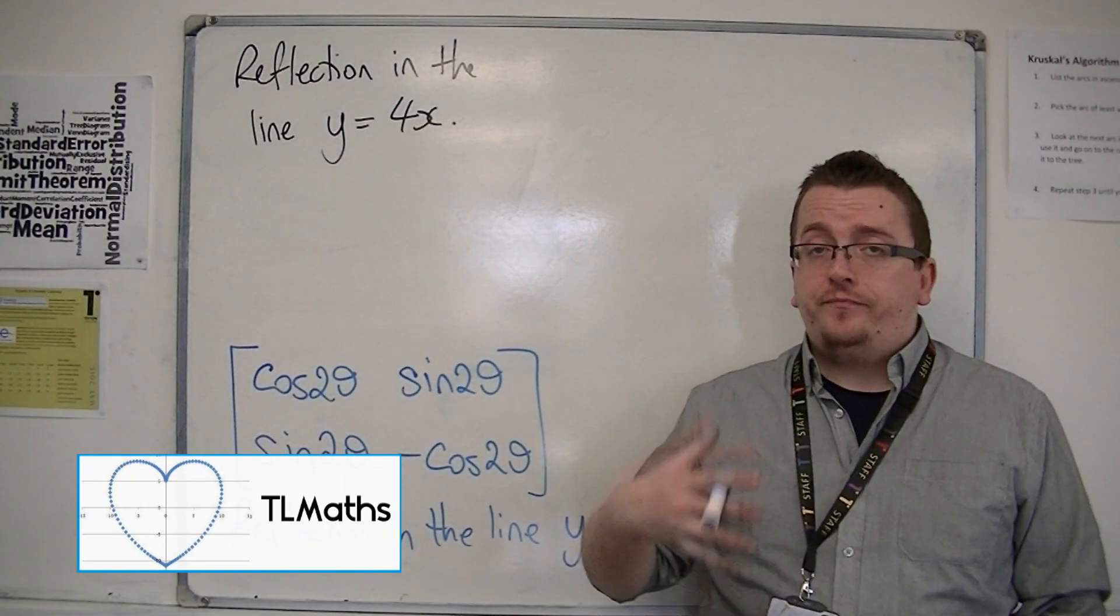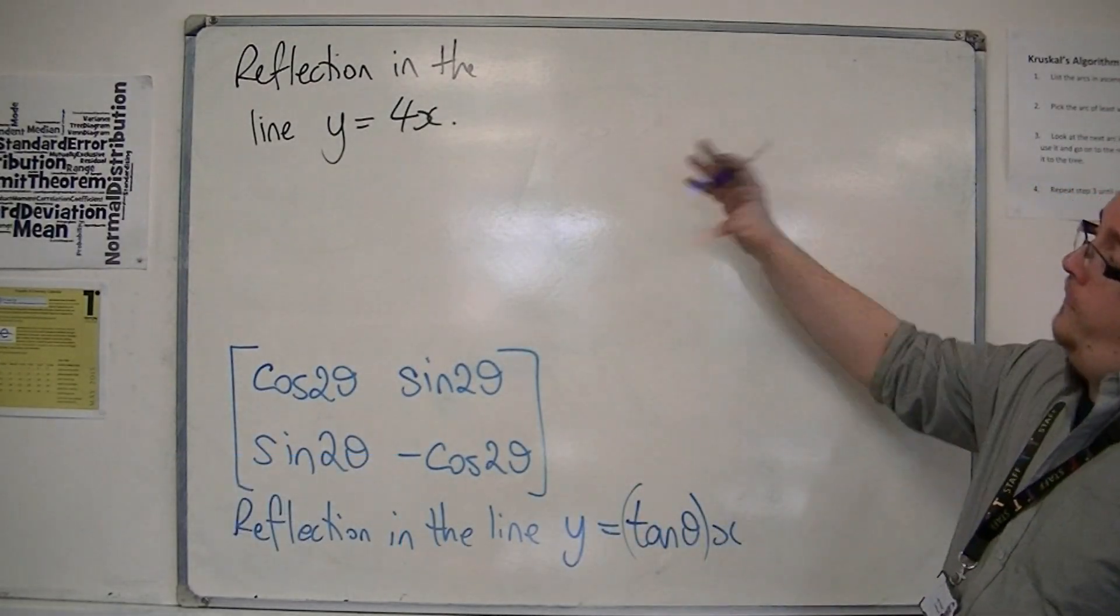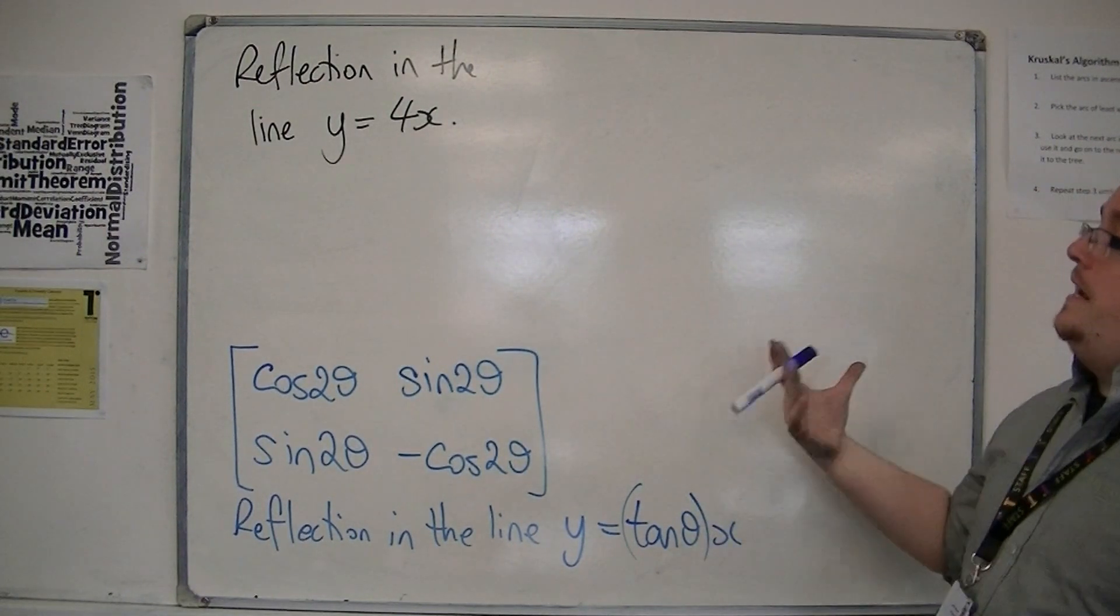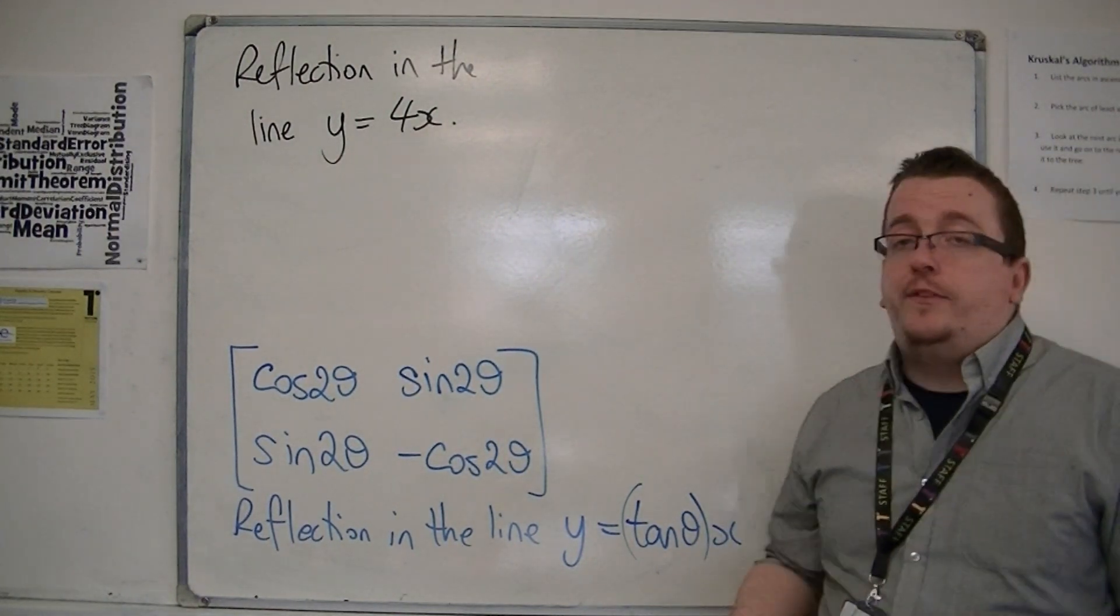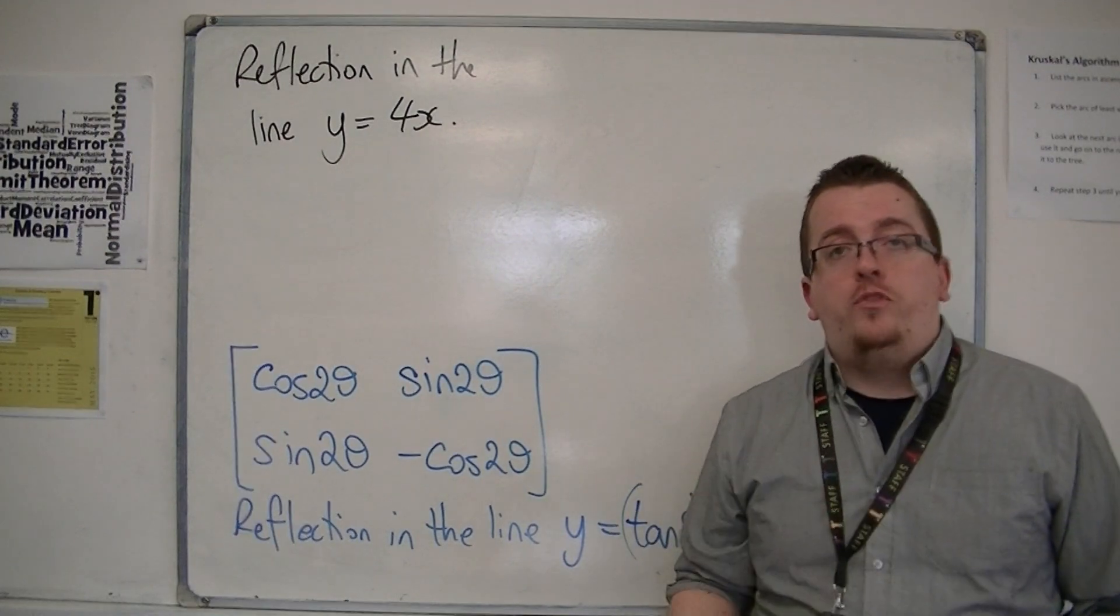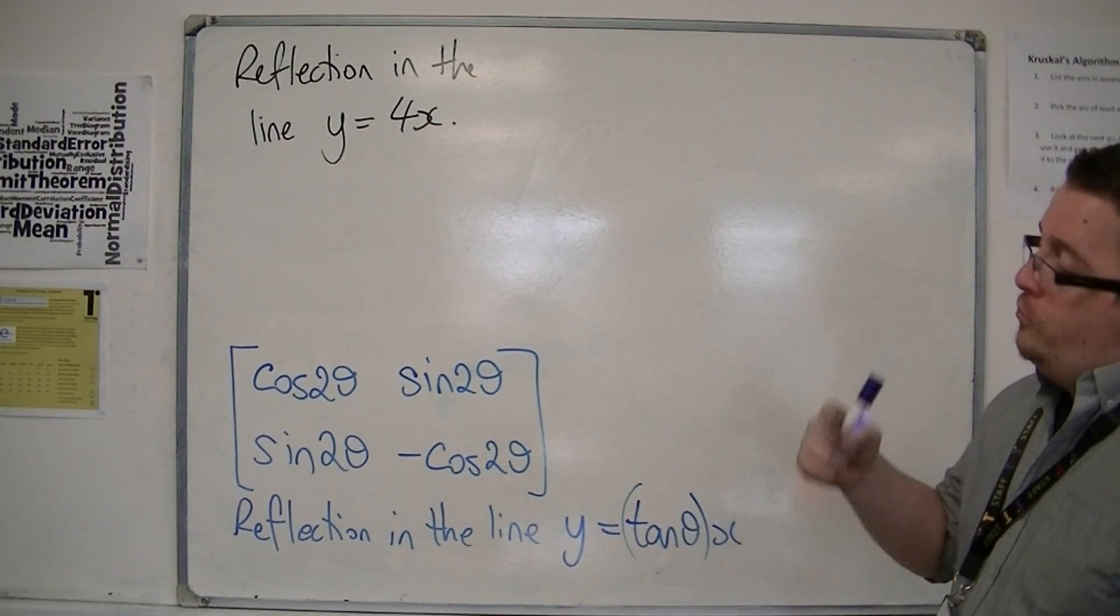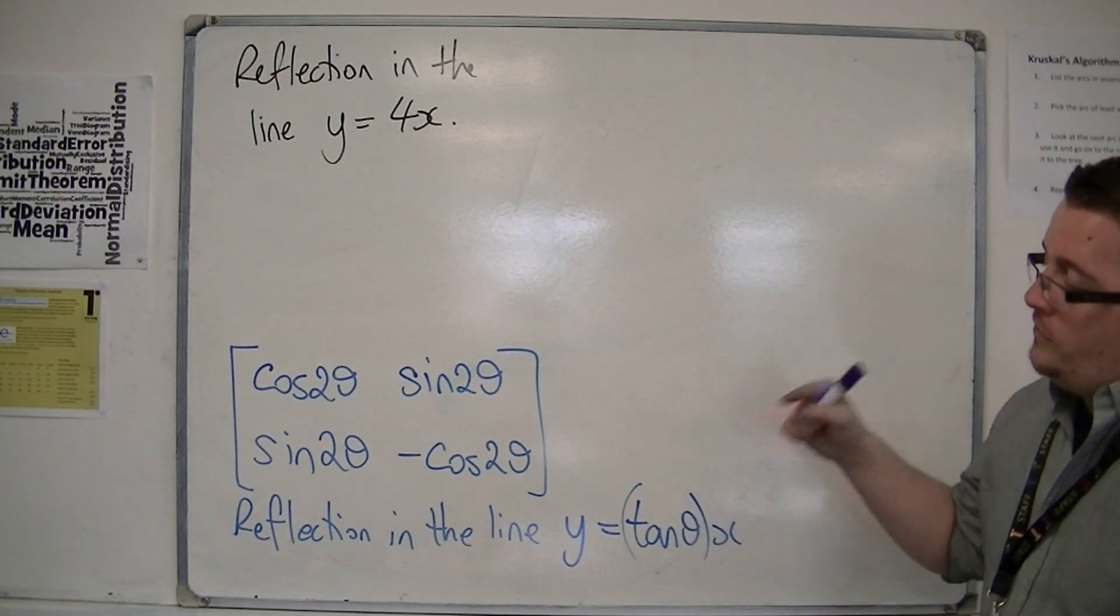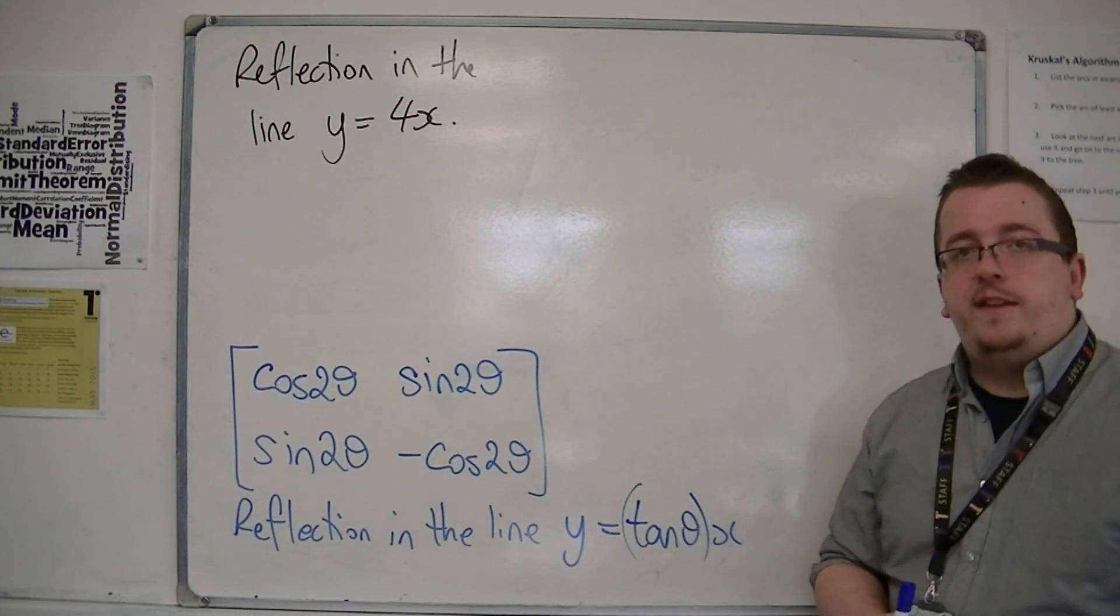So let's say I want to reflect some points or shape in the line y equals 4x, and I want to know what matrix I should use. In the previous video we showed that this was the matrix that will allow you to reflect in the line y equals tan theta x.